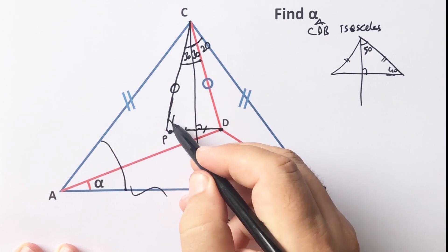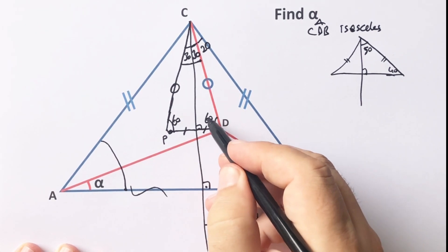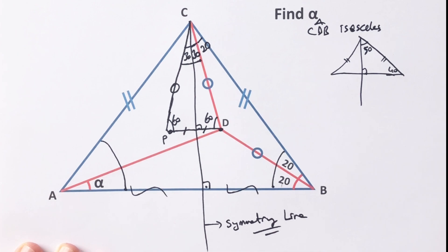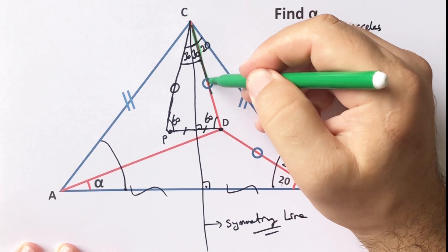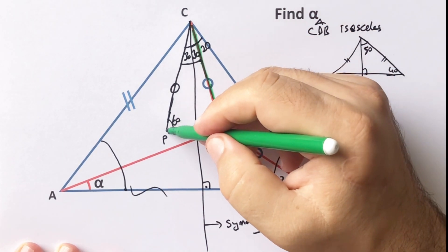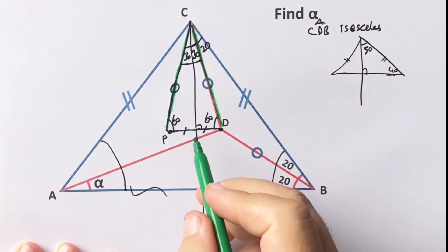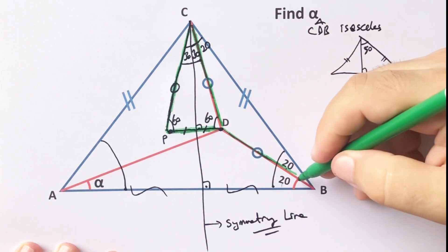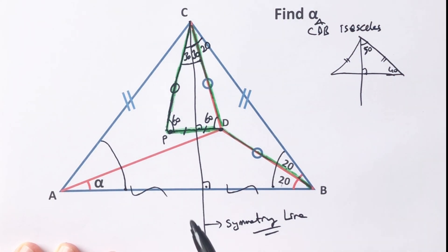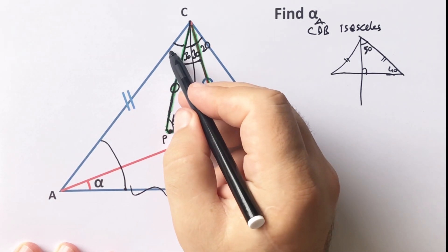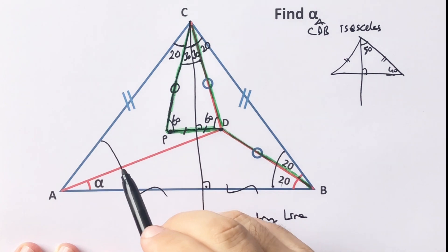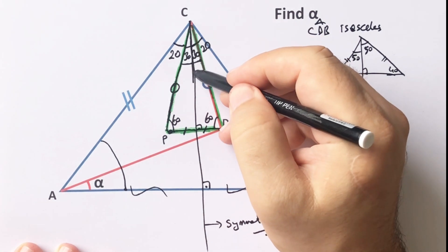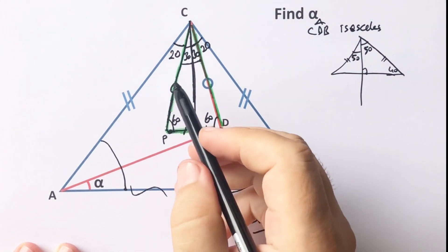Notice that these angles are 60 degrees, which means we get an equilateral triangle. Let's draw with the green pen: this side, this side, and here — these are equal sides. Then 20 degrees are left here, because here is 50 degrees and this line is a bisector line.